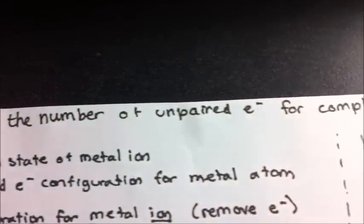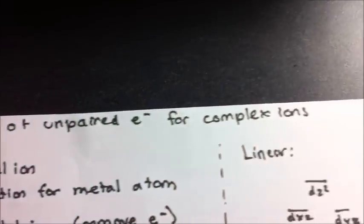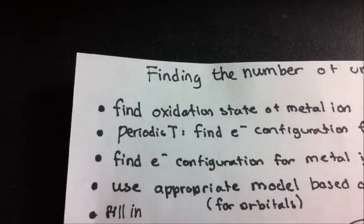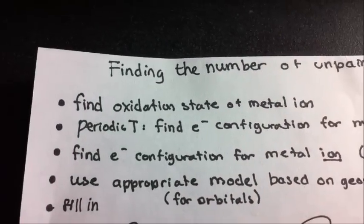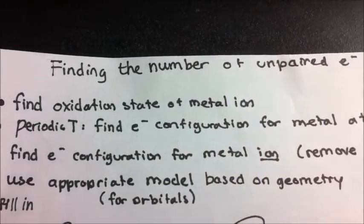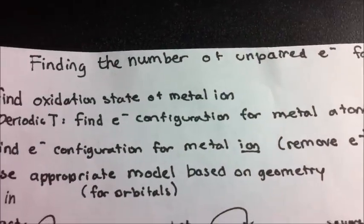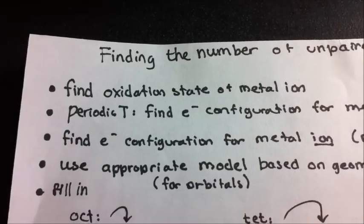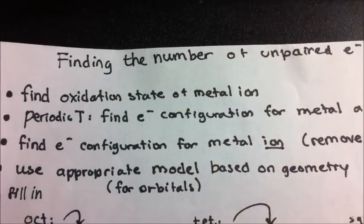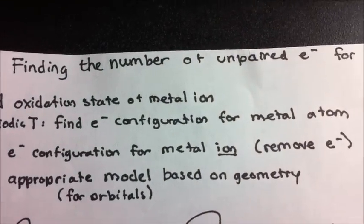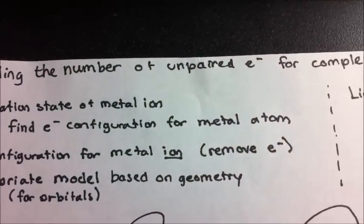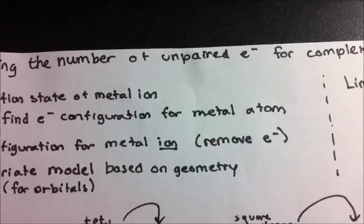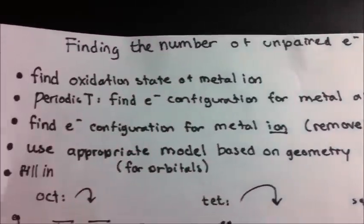Let's talk about finding the number of unpaired electrons for complex ions. First, we want to find the oxidation state of our metal ion in question. Next, we go to a periodic table and find the electron configuration for our metal atom in question.